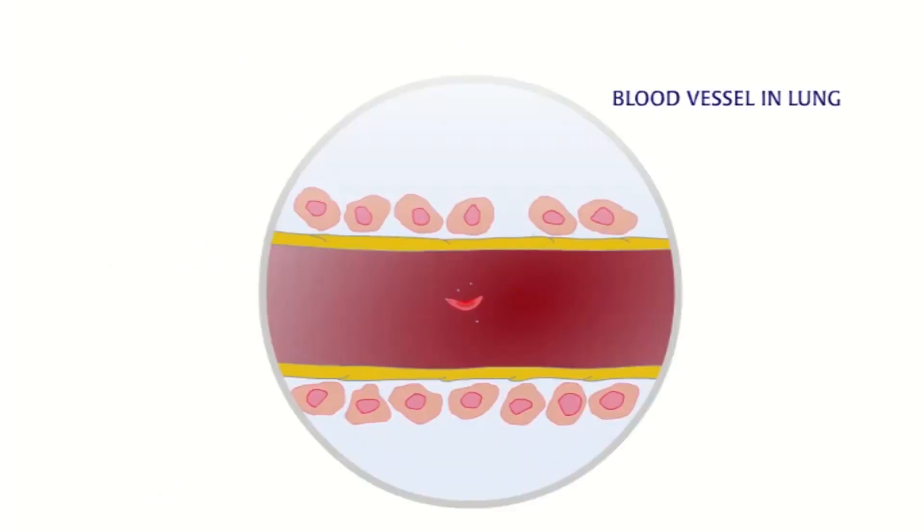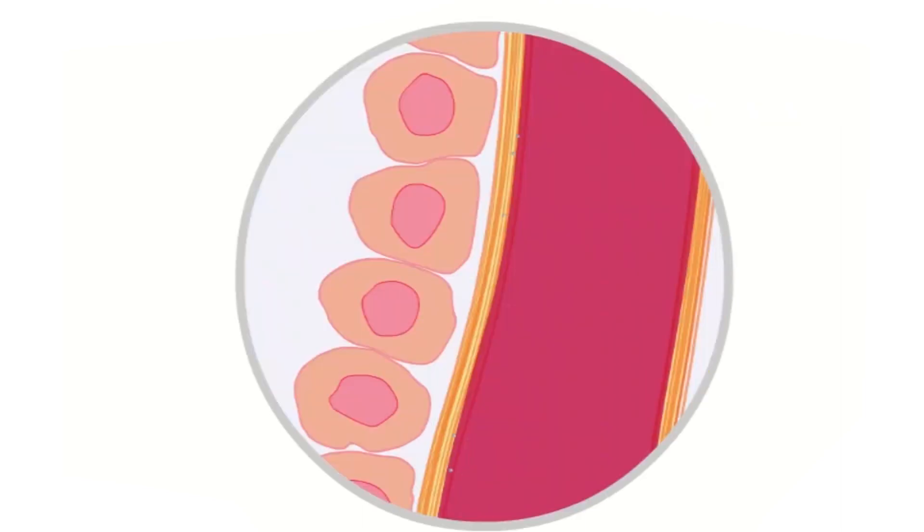stretch the red blood cell into the shape of a sickle or banana. The cell only springs back to its normal shape when it returns to the lungs and captures more oxygen. Oxygen binding instantly breaks up the polymer. This repeated springing in and out of sickle shape makes the cell stuck in sickle shape. It also damages